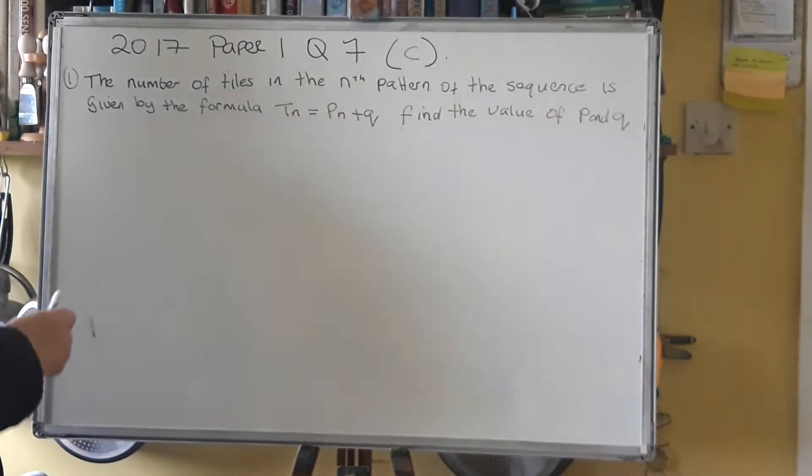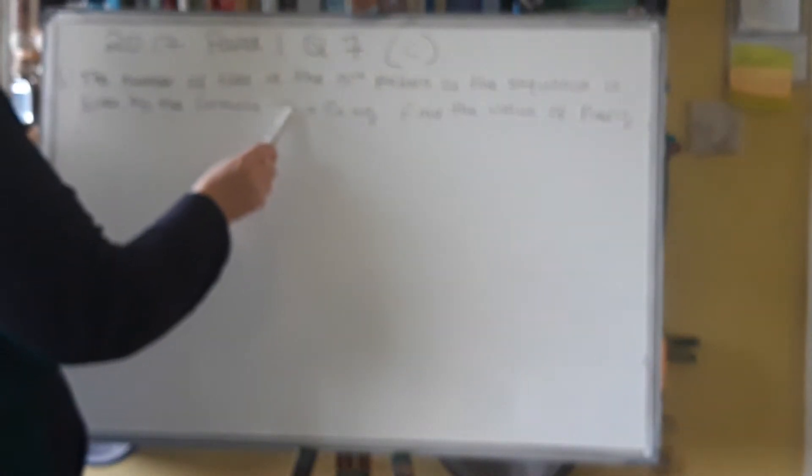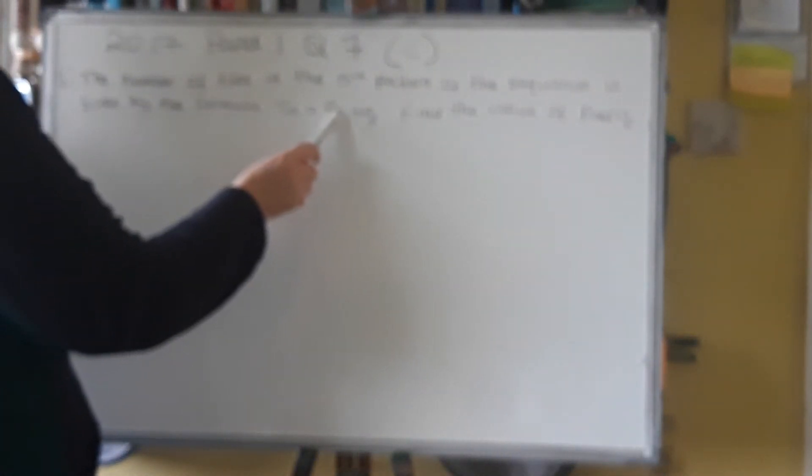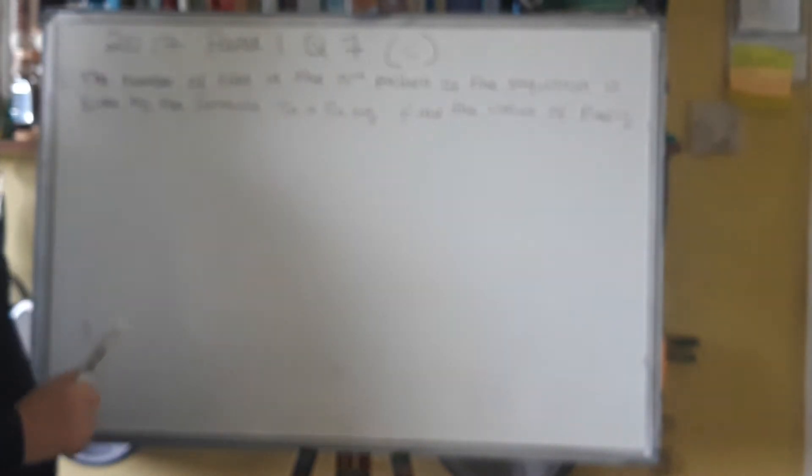Part C. Assuming the pattern continues, the number of tiles in the nth pattern, that means in any pattern, of the sequence is given by the formula Tn equals Pn plus Q. Find the value of P and Q. Now, we did this in one of the previous questions. So again, pause, have a go, and play again to see the solution.